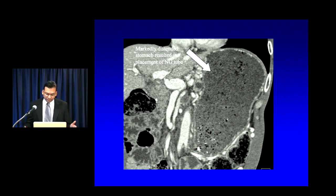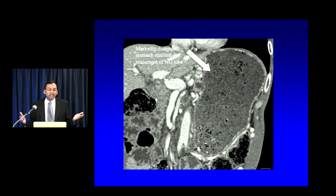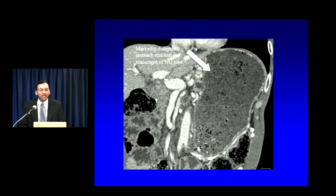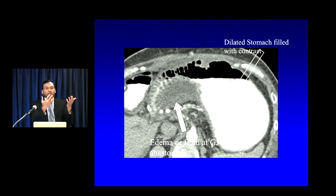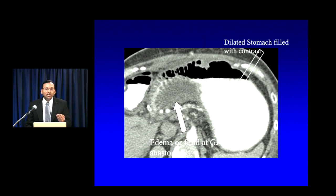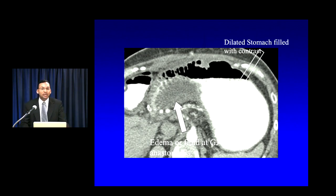There are some features on CT that can help suggest delayed gastric emptying: if you see a massively distended stomach with lots of retained food-particulate material, you're probably dealing with a patient who has delayed gastric emptying. The diagnosis is usually obvious to the surgeons clinically. In the immediate postoperative period, you can also end up with a dilated stomach as a result of edema and thickening at the gastrojejunal anastomosis causing partial obstruction, which should resolve over time as the edema goes away.